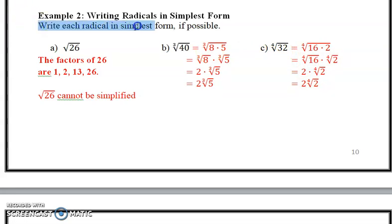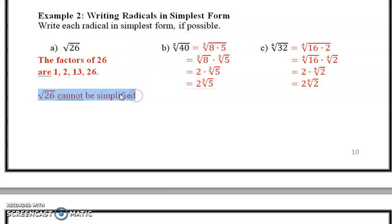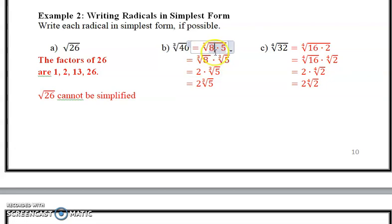We do this when asked to write each radical in simplest form if possible. The first one wasn't possible because there were no perfect squares within the factors of 26. For the cube root of 40, one of the factors was 8, and 8 is indeed a perfect cube — it's the highest perfect cube within 40. The next one would be 27, and 27 is not a factor.